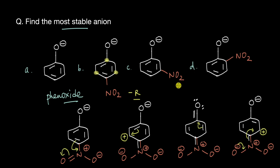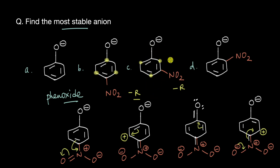Now looking at the meta-NO2 anion: NO2 is still a minus-R group and brings about positive charges at its ortho and para positions, but in this case there won't be any positive charge directly under the oxygen atom, and no empty orbital is created there. So this NO2 group, even though it is minus-R, won't help in removing the negative charge from oxygen via resonance. Purely based on resonance, the stability of this anion is not going to be different from phenoxide.